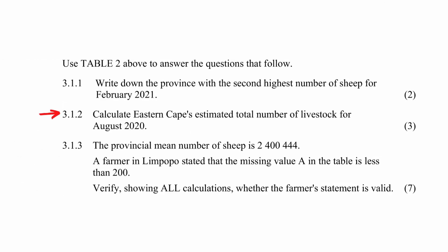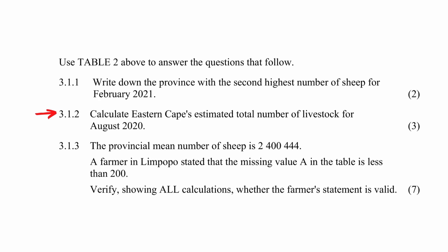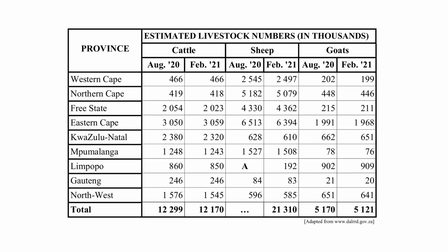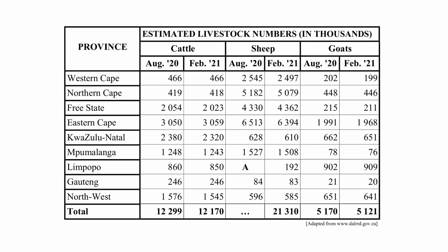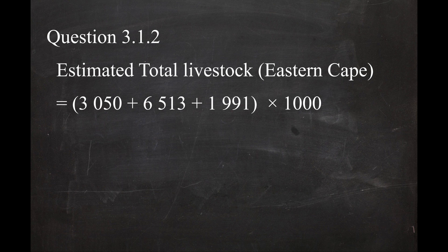In question 3.1.2, you have to calculate the total estimated number of livestock in the Eastern Cape for 2020. The total is 3,050 plus 6,513 plus 1,991 — all values are in thousands — which equals a total of 11,554,000.